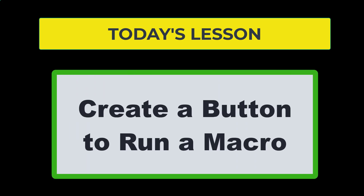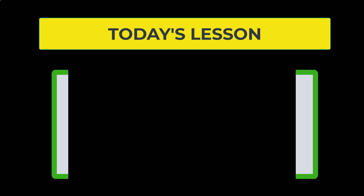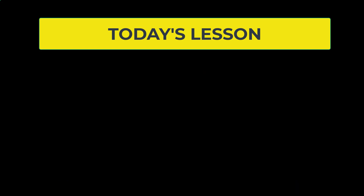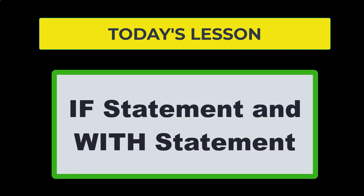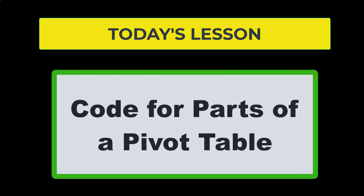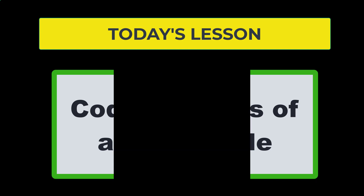We're going to learn how to create a button that a user can click to run a macro, how to tell if data has been entered in various cells on an Excel spreadsheet and if not, return the user with an error message. We're also going to learn how to use an if statement as well as the with statement inside of VBA, and how to identify a field inside of a pivot table on a worksheet inside of Excel.